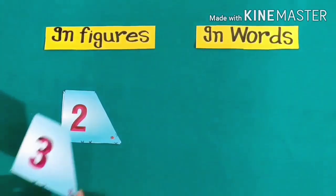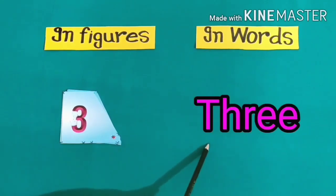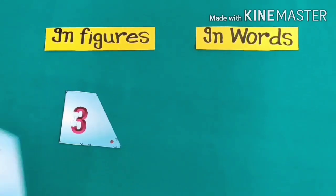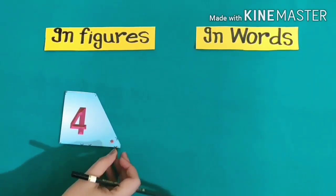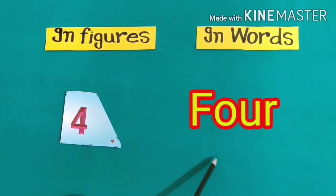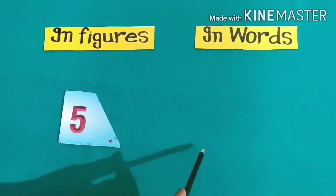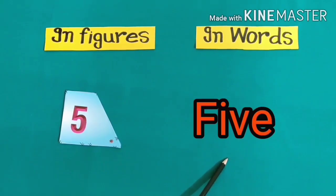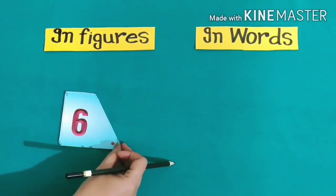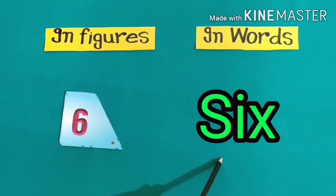Next one is 3. We will write it in words like this: three. Students, our next number is 4 and in words we will write it: four. 5 — we will write it in words like this: five. Students, our next number is 6. We will write it in words like this: six.